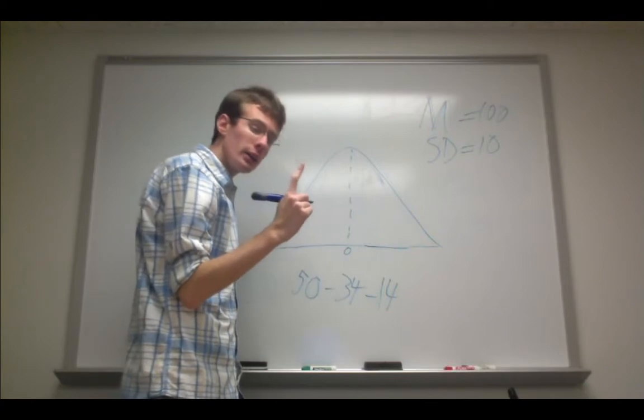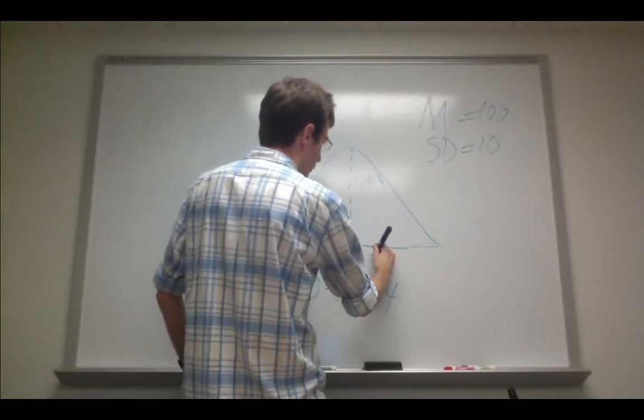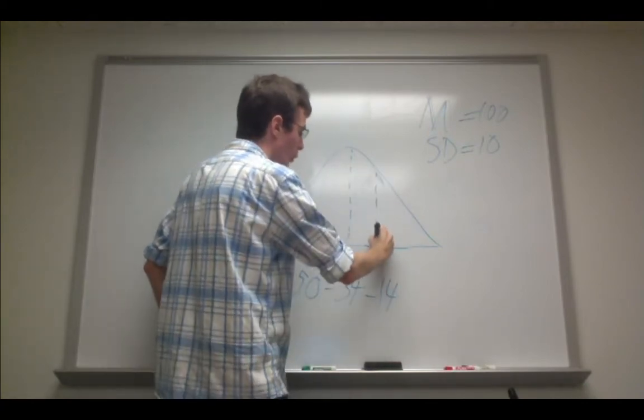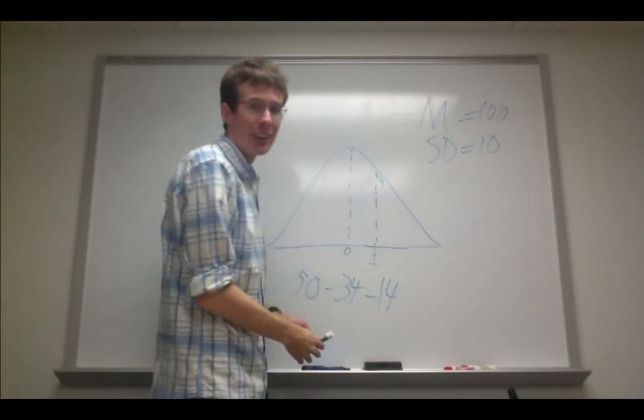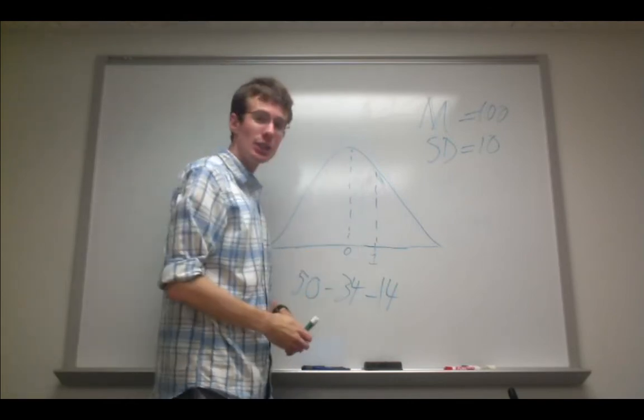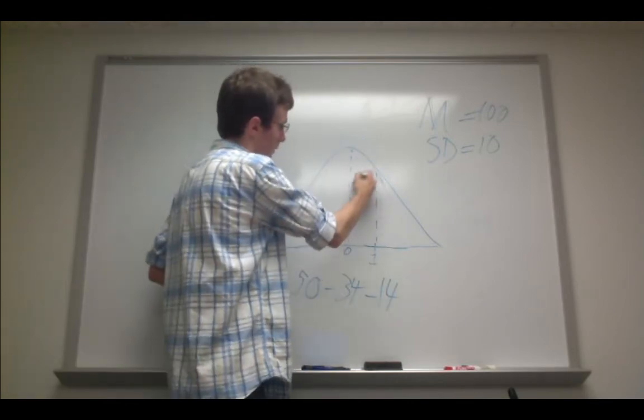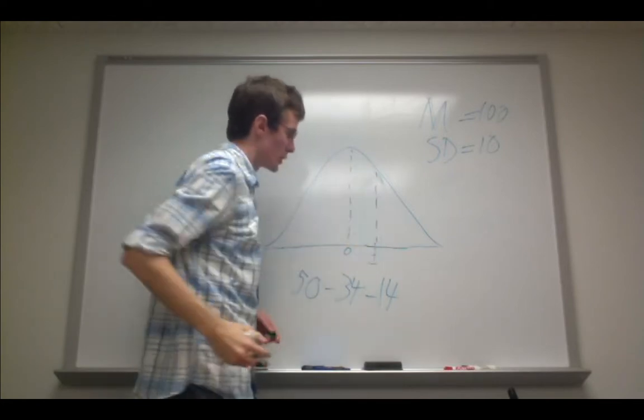For a z-score of 1, if we plot it right here, 34% of the distribution lies between the mean and a z-score of 1. In other words, this shaded region right here.